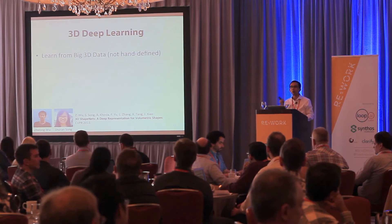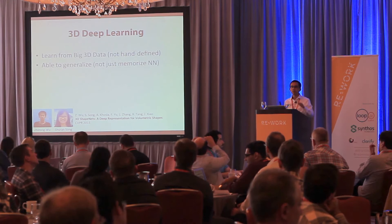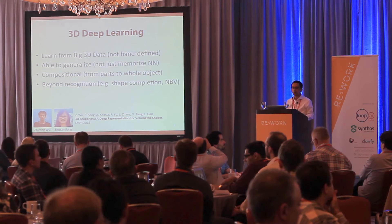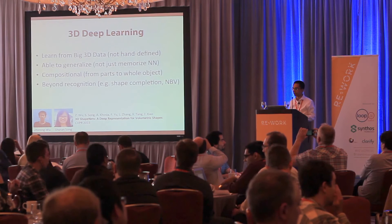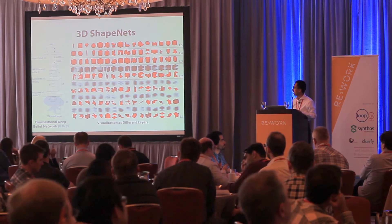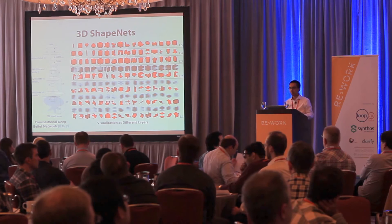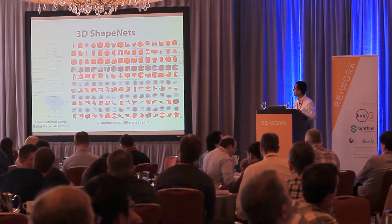Ideally, we want a representation that can automatically learn from big 3D data — not manually hand-defined — and be able to generalize, not just memorize. It should be compositional: starting from object parts, combining them into bigger object parts, and eventually forming a complete object. And it should go beyond recognition — not just predicting a label, but doing other tasks like shape completion. So we propose a deep learning network called 3D Deep Learning Network, which uses a convolutional network to learn the joint probability distribution between a 3D voxel and the object label. Here is some visualization of our network.